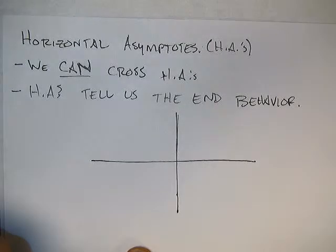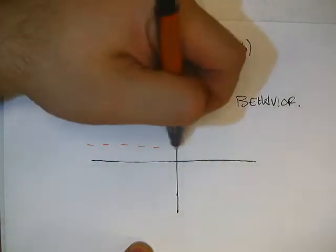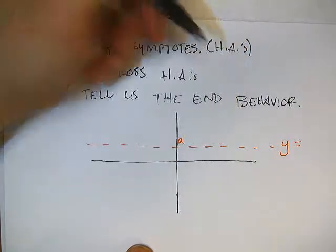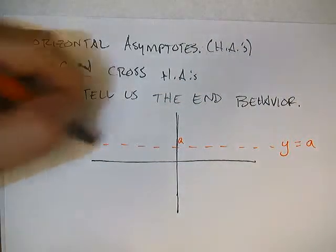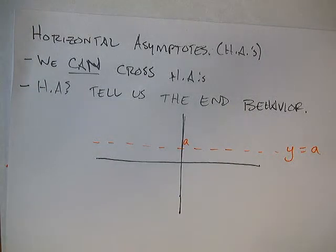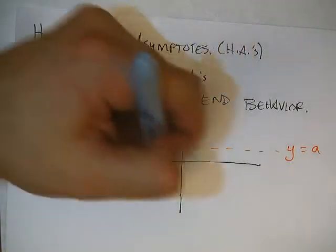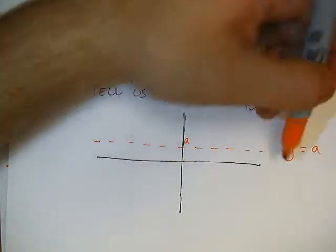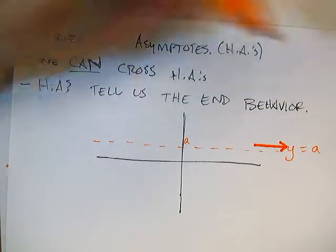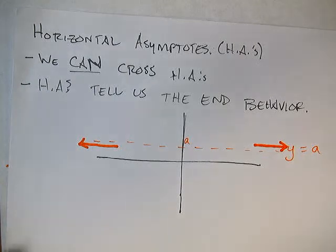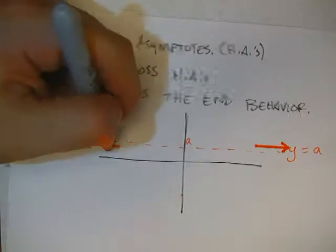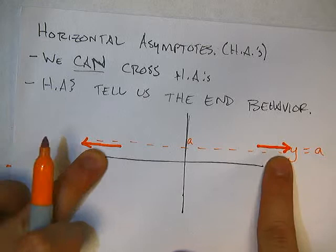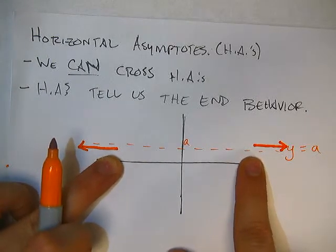Sometimes I'll call them HAs. So we can cross horizontal asymptotes, but horizontal asymptotes tell us the end behavior. In other words, when I say tell us the end behavior, it tells us what's going to happen when we're far away from the origin. So usually, my horizontal asymptote is going to look something like this. It's just going to be a horizontal line given by an equation, y equals some value. In this case, let's call that value A. So in this case, it's y equals A, and this is my horizontal asymptote. So no matter what's happening, no matter what's happening anywhere near the origin, it doesn't really affect, our horizontal asymptote doesn't really affect things near the origin.